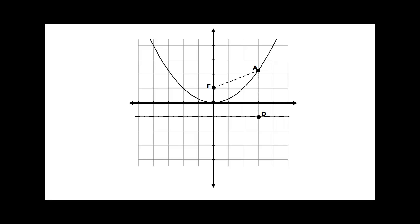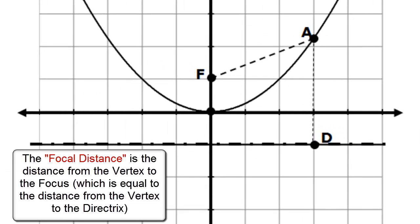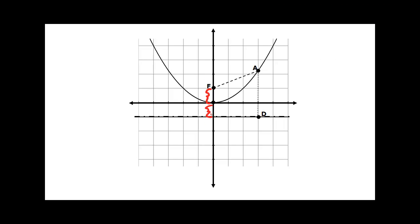Another term that is helpful to know when describing characteristics of parabolas is the idea of the focal distance. The focal distance is defined as the distance from the vertex to the focus, so this distance here, as well as the distance from the vertex to the directrix. So this right here is also referred to as the focal distance. Those two distances are equivalent to each other.